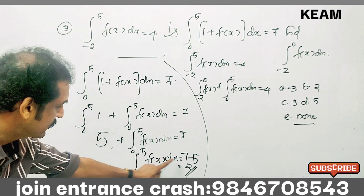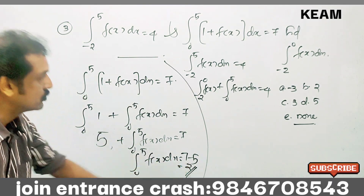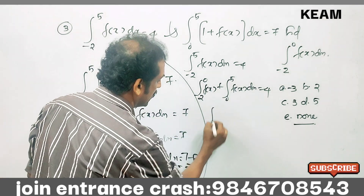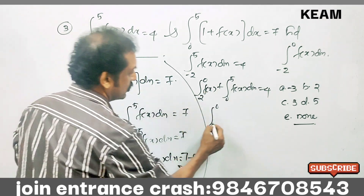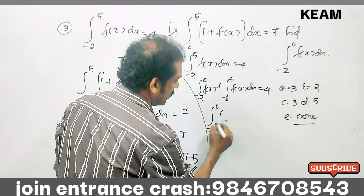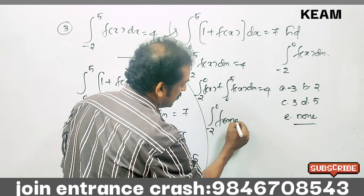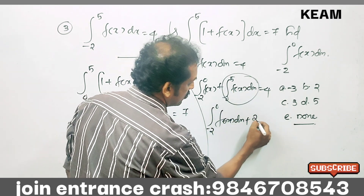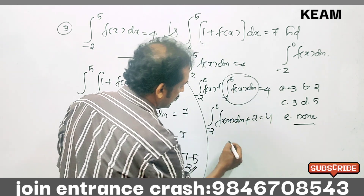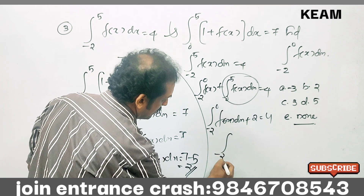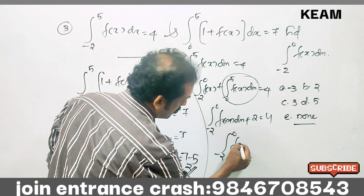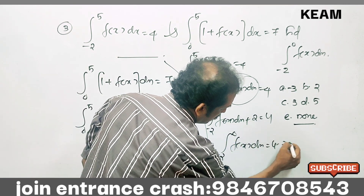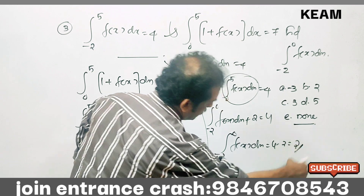We know integral from 0 to 5 of f(x) dx is equal to 2. So, integral from minus 2 to 0 of f(x) dx plus 2 equals 4. Therefore, integral from minus 2 to 0 of f(x) dx equals 4 minus 2. The answer is 2.